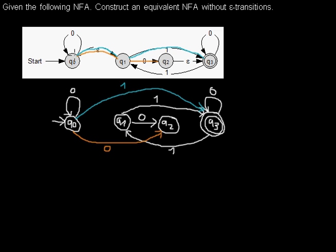We only have zero and one as input symbols and there are no other transitions from Q0 to take into account, so I'm done with Q0. Q1 doesn't have any outgoing epsilon transitions, so I don't have to do anything there.